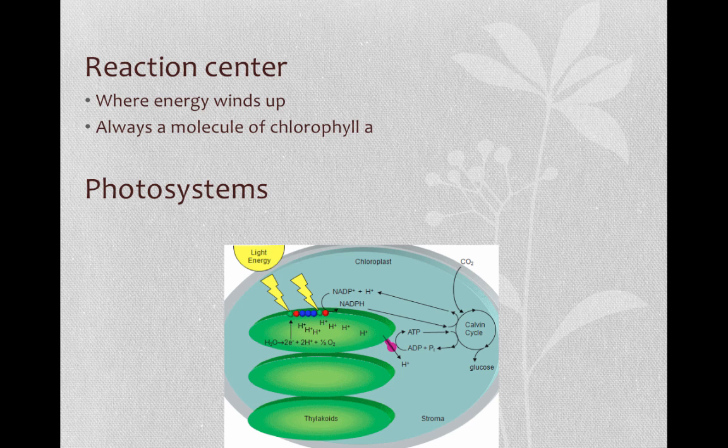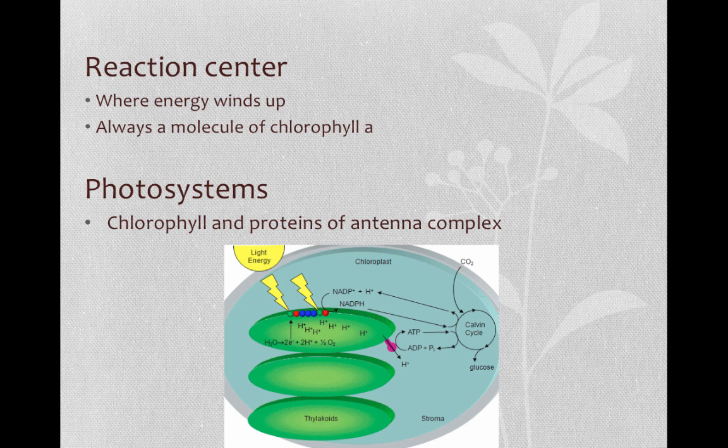The chlorophyll molecules and proteins of the antenna complex are arranged into photosystems, which are embedded in the thylakoid membrane. There are two types of photosystems: photosystem I and photosystem II.